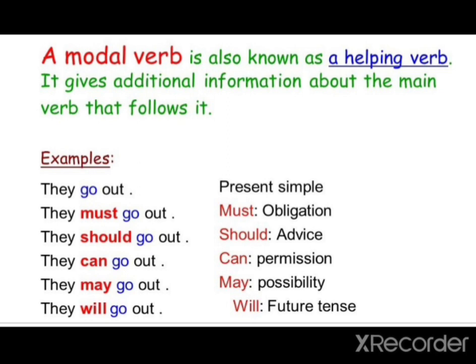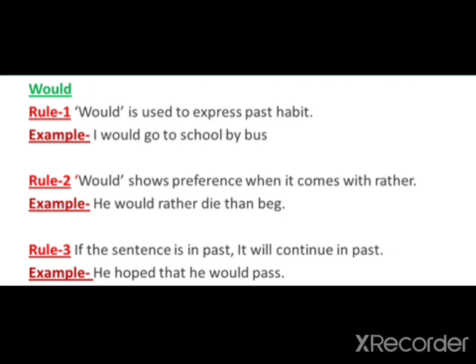Let us see some more details about the modal verb. Rule number one: 'would' is used to express past habit. For example, 'I would go to school by bus.' Rule number two: 'would' shows preference when it comes with 'rather.' For example, 'He would rather die than beg.' Rule number three: if the sentence is in past tense, it will continue in the past. For example, 'He hoped that he would pass.' These are the three different rules where you can use the modal verb 'would.'